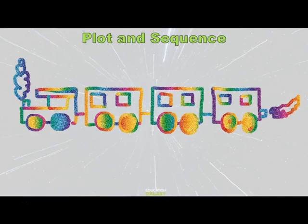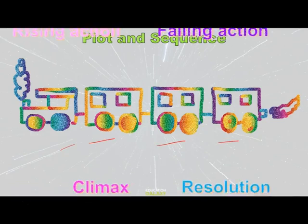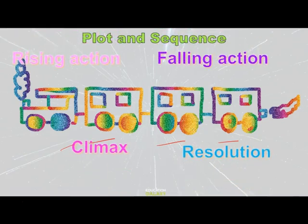Do you know a choo-choo train? Do you know how there are parts of a train? All the different boxcars come in different orders. So in a plot, events happen in a different order.